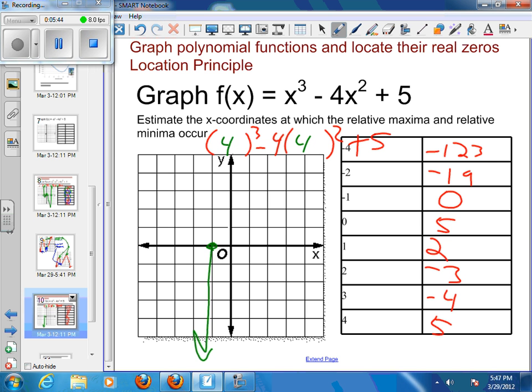Then at zero, I'm at five. At one, I'm at two. And then at two, I'm down at negative three. Three, I'm at negative four. And then at four, I'm back up at five.